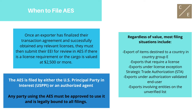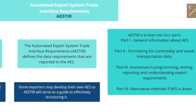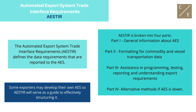The AES is filed by either the U.S. Principal Party in Interest, the USPPI, or an authorized agent. Any party using the AES must be approved to use it and is legally bound to all filings. Next is the key tool for using AES: the Automated Export System Trade Interface Requirements, AESTIR, which defines the data requirements that are reported to the AES.